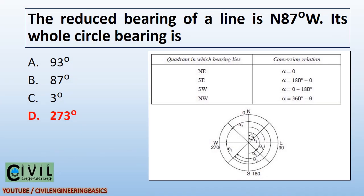The reduced bearing of a line is North 87 degree West. Its whole circle bearing is 273 degrees.